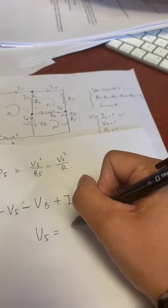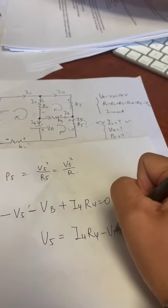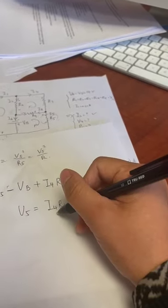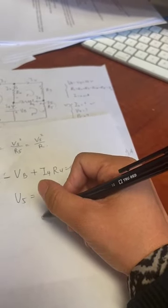And V5 is simply I4 R4 minus VB, the battery. So at this point, you can plug in the I4. You just calculate it.